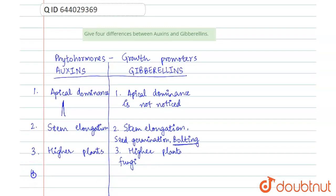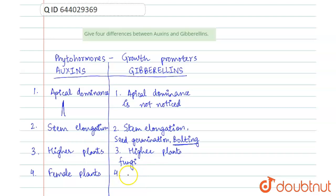Another important difference is that auxin application — or if auxin is present in the plant — causes the appearance of female flowers, meaning flowers will be more female in nature, with more gynoecium. But if you apply gibberellins, or if the concentration of gibberellin is high inside the plant, it will cause the appearance of male flowers. So unisexuality is maintained by both auxins and gibberellins.